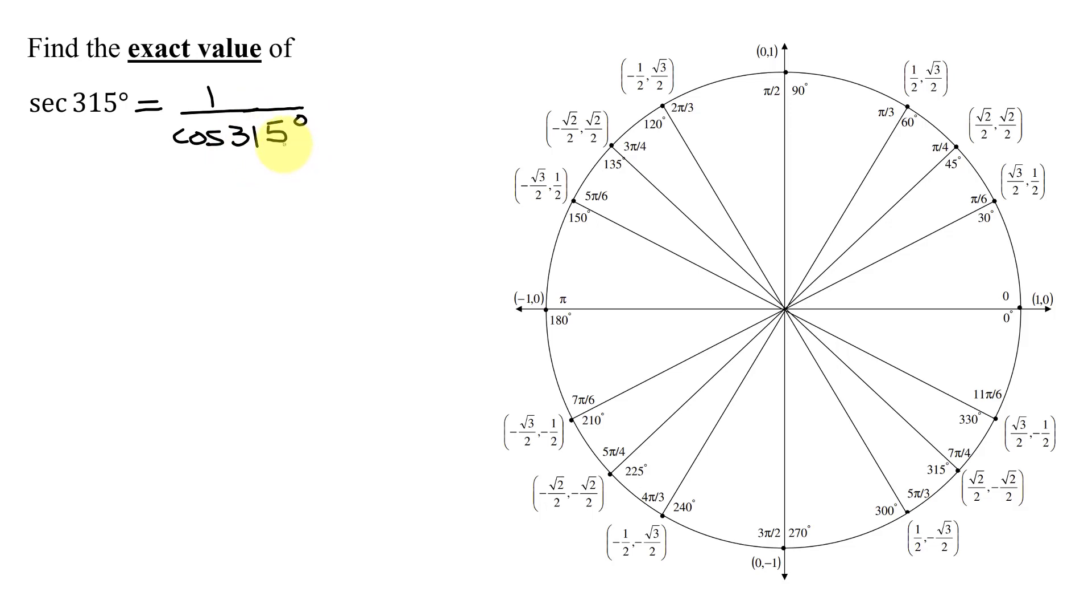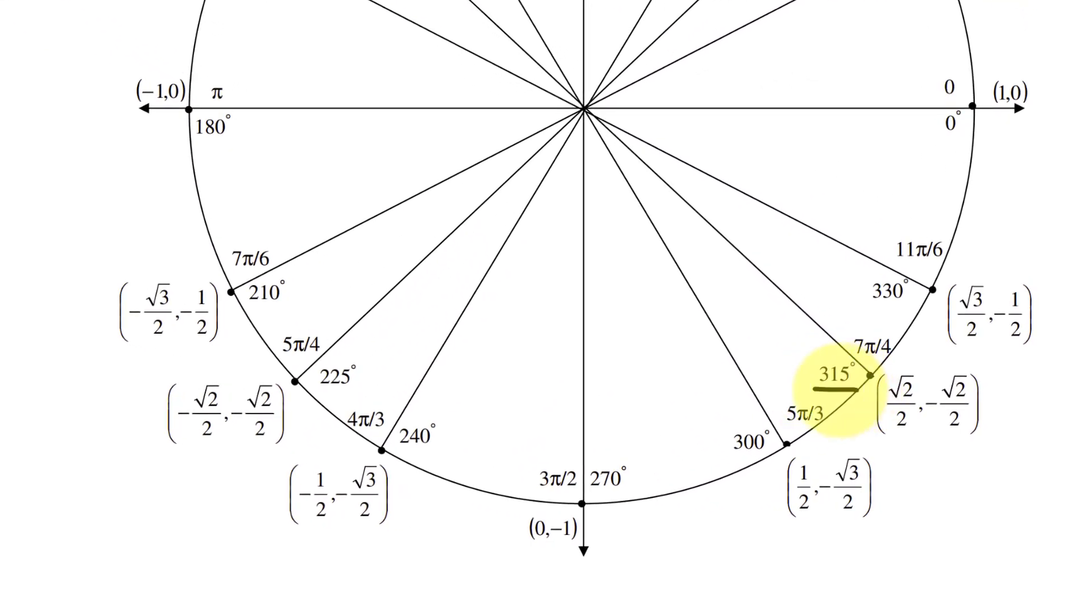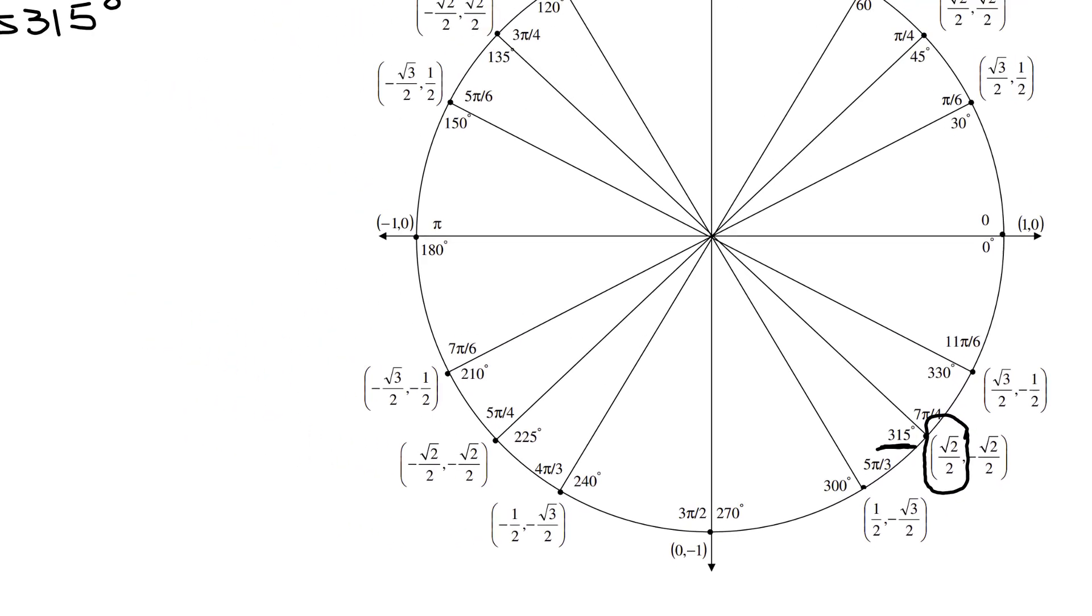Now is 315 degrees on the unit circle? Yes, it's right over here. And the cosine is the x-coordinate of this point, so it's the square root of 2 divided by 2.